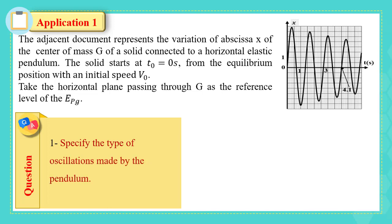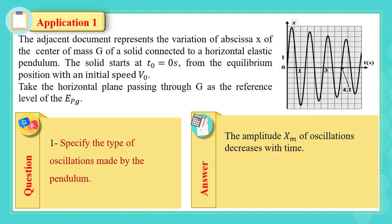Specify the type of oscillations made by the pendulum. The amplitude xm of oscillations decreases with time. Then, the oscillations are free damped.